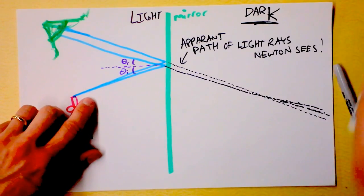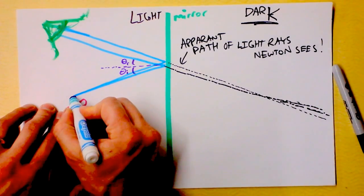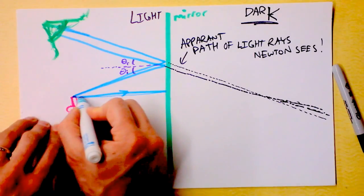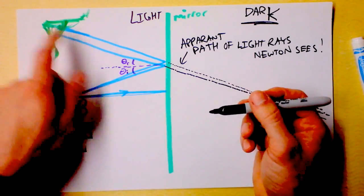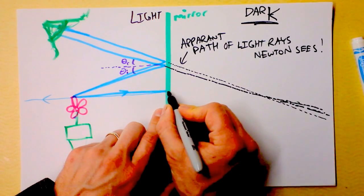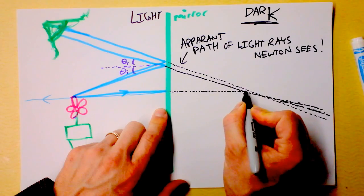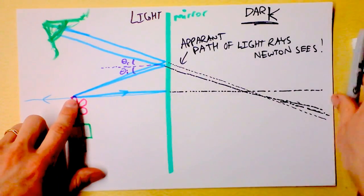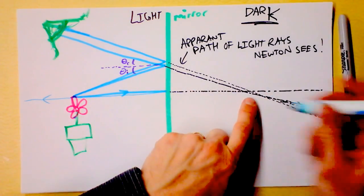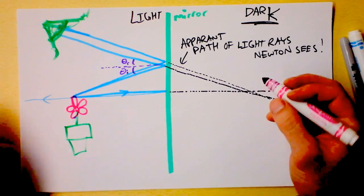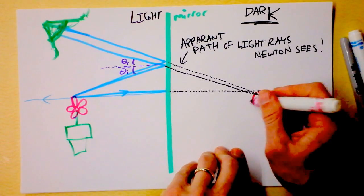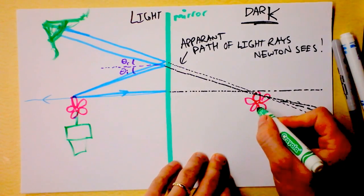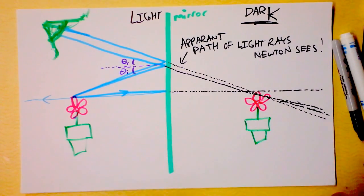Let's consider another light ray: there's light coming from the flower, bouncing off the mirror and going this direction. That light ray also seems to have come from back behind the mirror. A lot of these light rays seem to originate from the same point over here. Look — all these rays appear to intersect at the same point. It's as if there's a flower over here behind the mirror, and that's what Newton sees: he perceives the existence of a flower back behind the mirror.